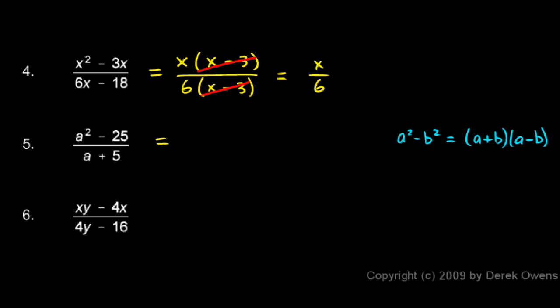So we'll apply that concept over here. a squared minus 25 factors as a plus 5 times a minus 5. And then on the bottom we still have a plus 5. So this a plus 5 factor up top cancels the a plus 5 on the bottom. And we're left with simply a minus 5 for our answer.